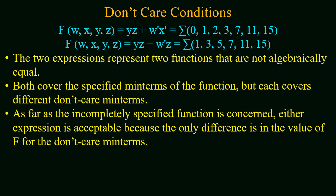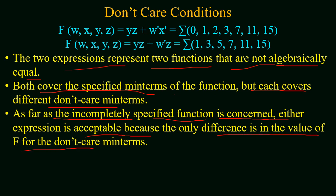The two boolean expressions represent two functions that are not algebraically equal. Both cover the specified min terms of the function, but each covers different don't care min terms. As far as the incompletely specified function is concerned, either expression is acceptable because the only difference is in the value of the function for the don't care min terms — the rest are the same.